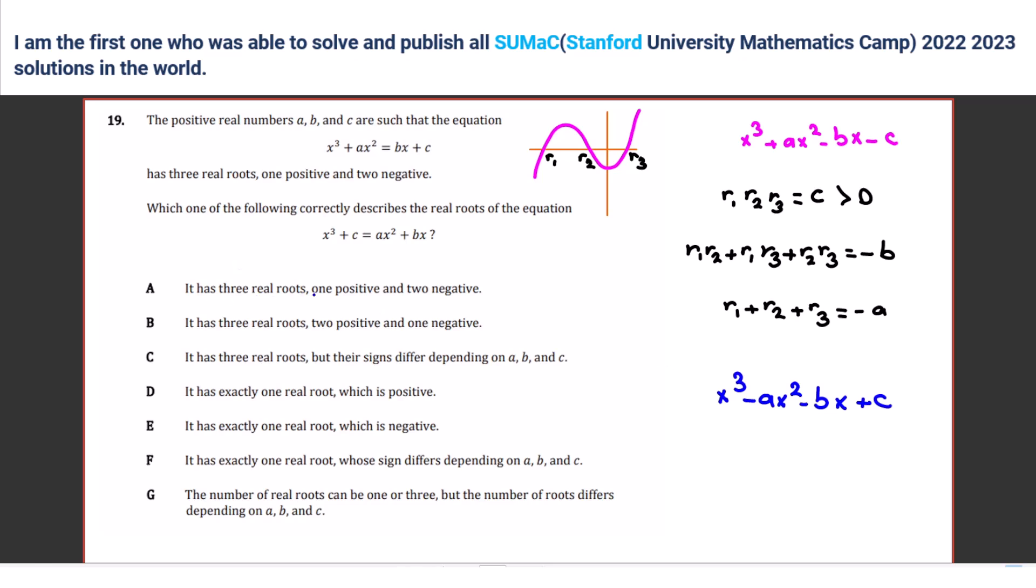It says it has three real roots, one positive, two negatives. Some of them says three. Some of them exactly one real root. The number of real roots can be one or three. So in one case, we should find the roots are positive. The roots are one. It cannot be two, right? It cannot be two if it is tangent.